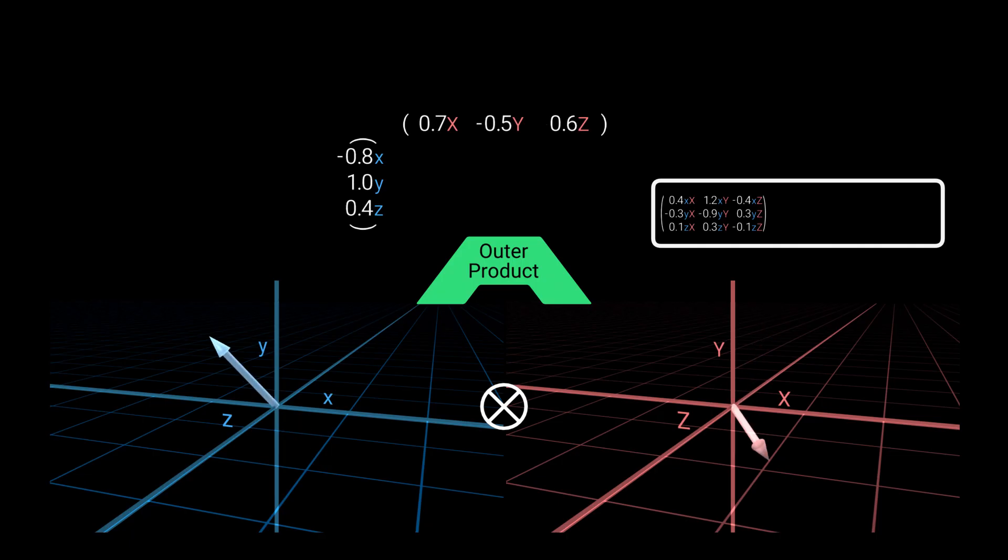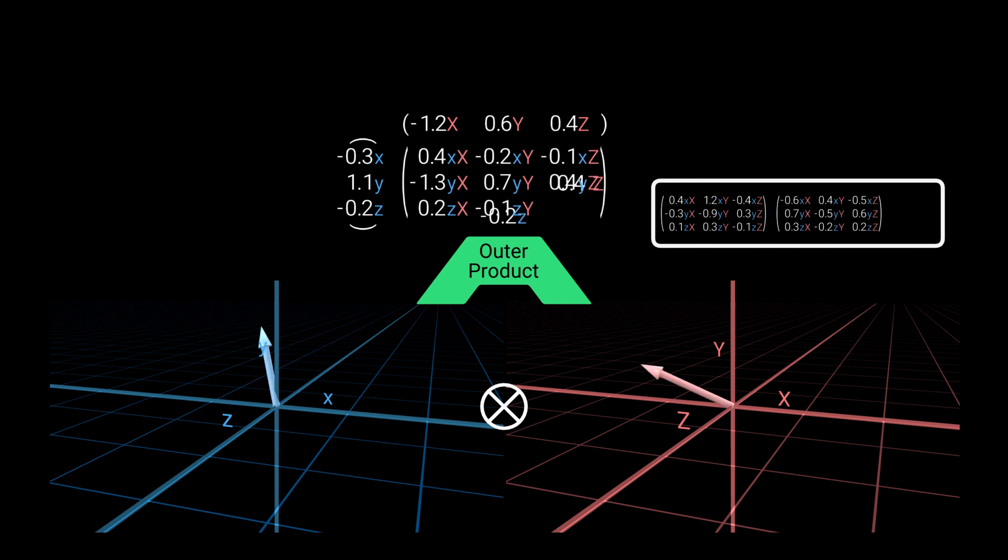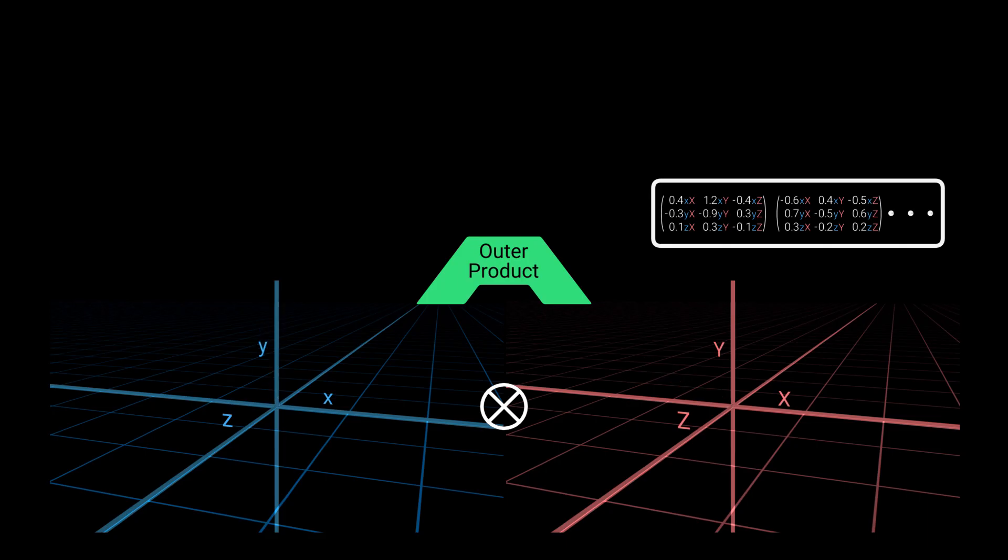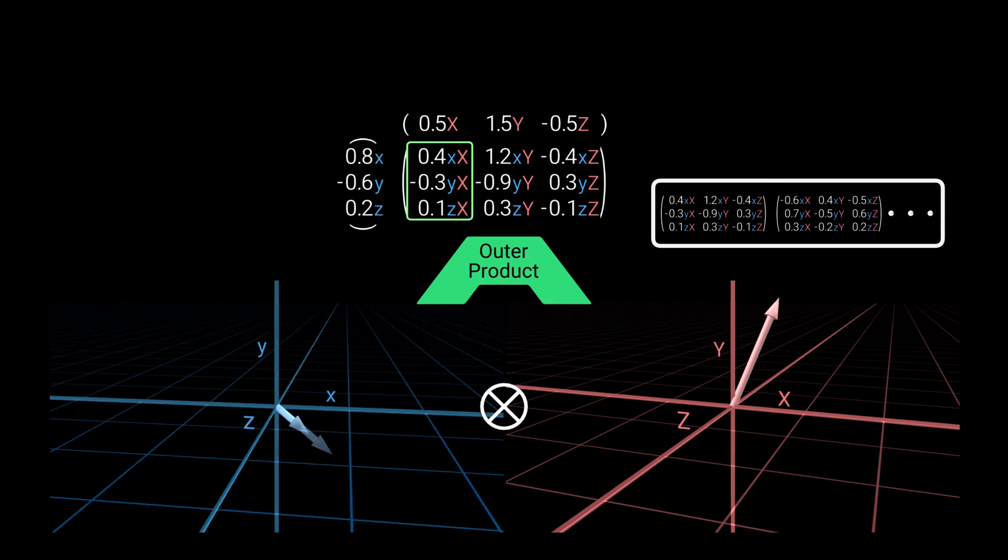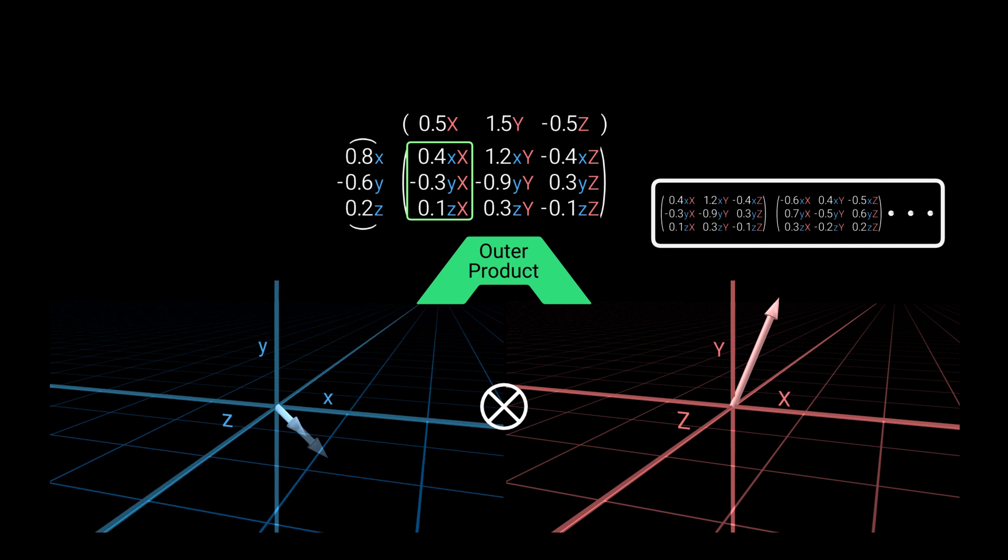Now let's pick some other pair of vectors, create another matrix, and place it in our space. And so on, we'll fill our space with all the matrices we can create using the outer product operator. But does this produce all possible three-by-three matrices? Let's return to our first example and focus on the first column. It was created by taking the blue vector's components and multiplying all of them by one-half. This is a scalar multiplication operation applied to the blue vector. If we draw this column as a vector in the blue space, we'll see it has the same direction as the blue vector but half the length. Similarly, the second column is the blue vector scaled by 1.5, and the last column is scaled by negative one-half.